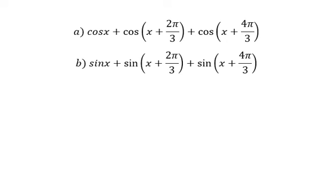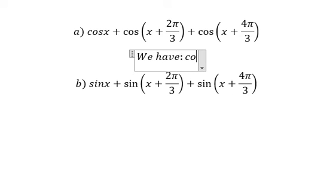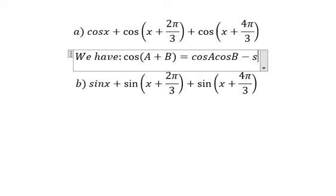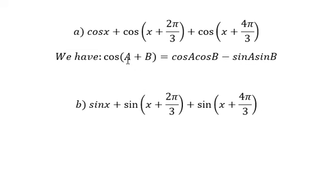Hello everybody. Today I will talk about trigonometry. The topic today is about simplification. Now I will show you how to answer. We have the formula here: cosine(A + B) equals cosine A cosine B minus sine A sine B. So we apply this formula.